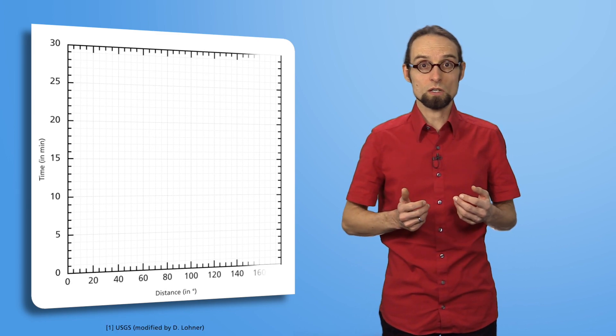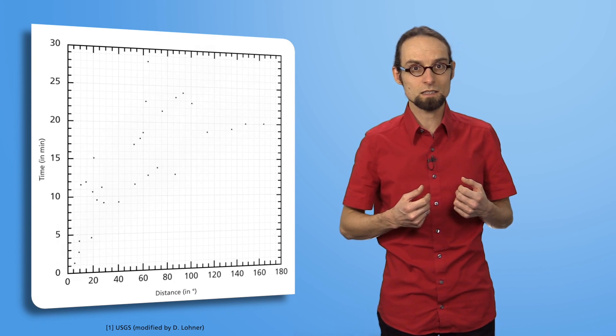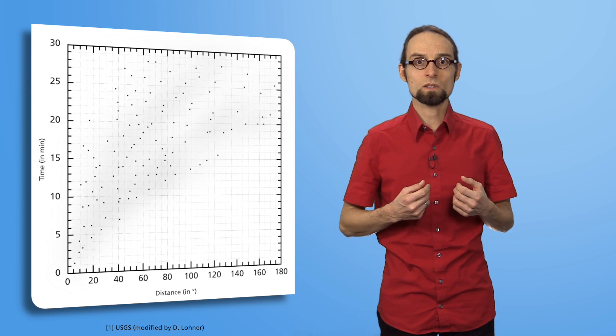Primarily, they only saw a cloud of dots on the diagram. However, the more earthquakes they plotted, the more clearly individual lines became apparent over time.